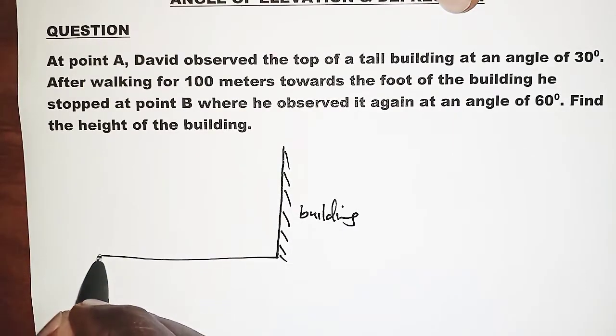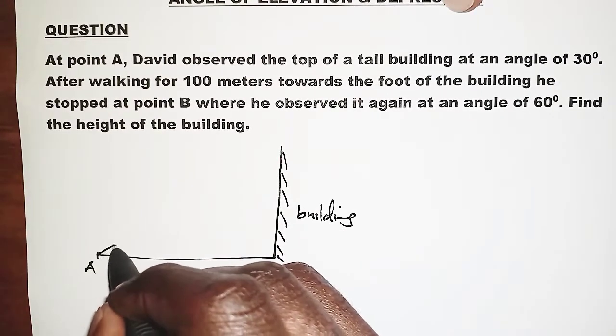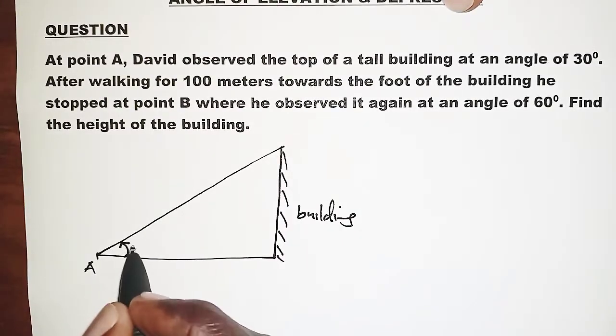And then we have David somewhere this side, so let's call this point A. If David observes the top of the building, then he observes it at an angle which is 30 degrees.